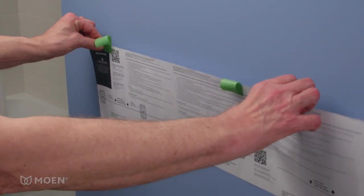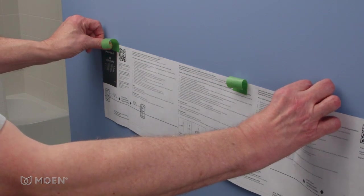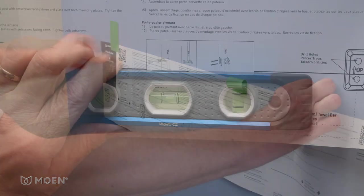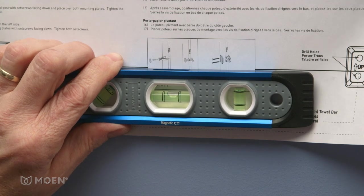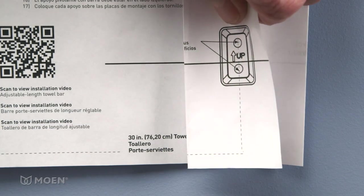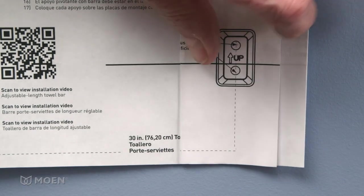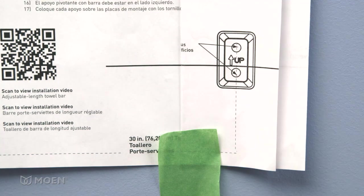Place the mounting template at the proper location and tape one side to the wall. Use a level to ensure the template is even and tape the other side. Then fold the mounting template to match the desired length. Make sure the horizontal lines on the template line up after folding.